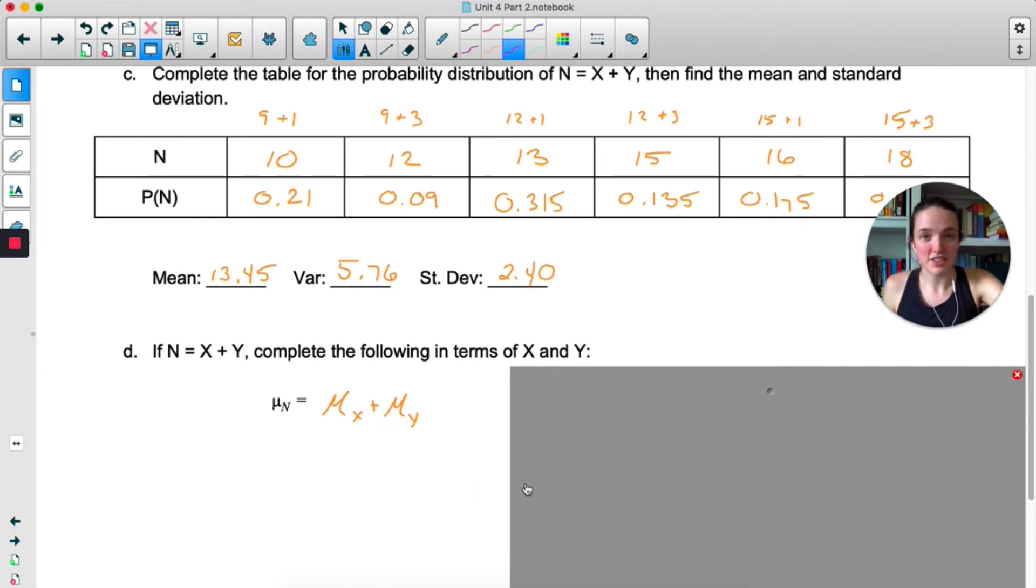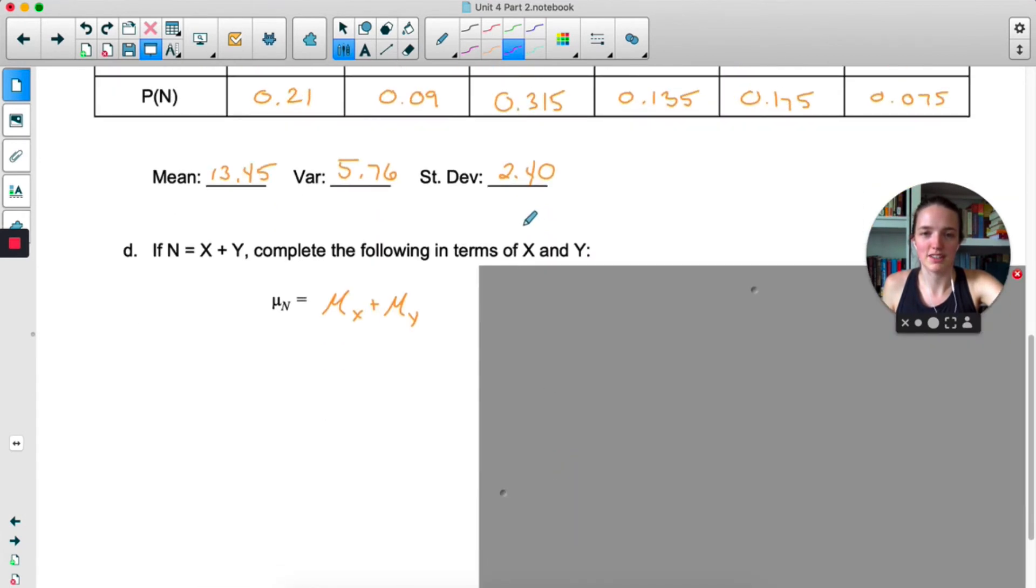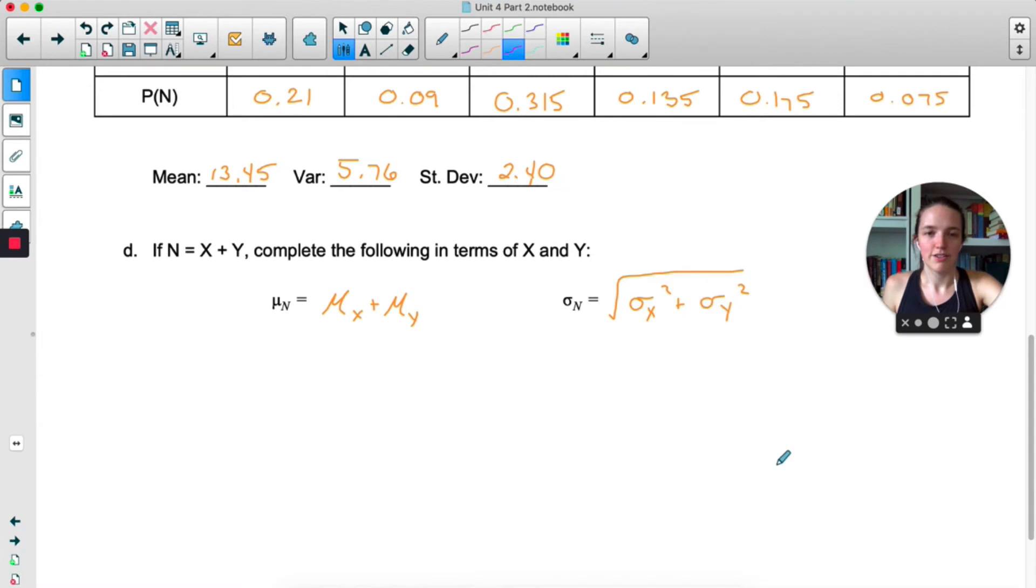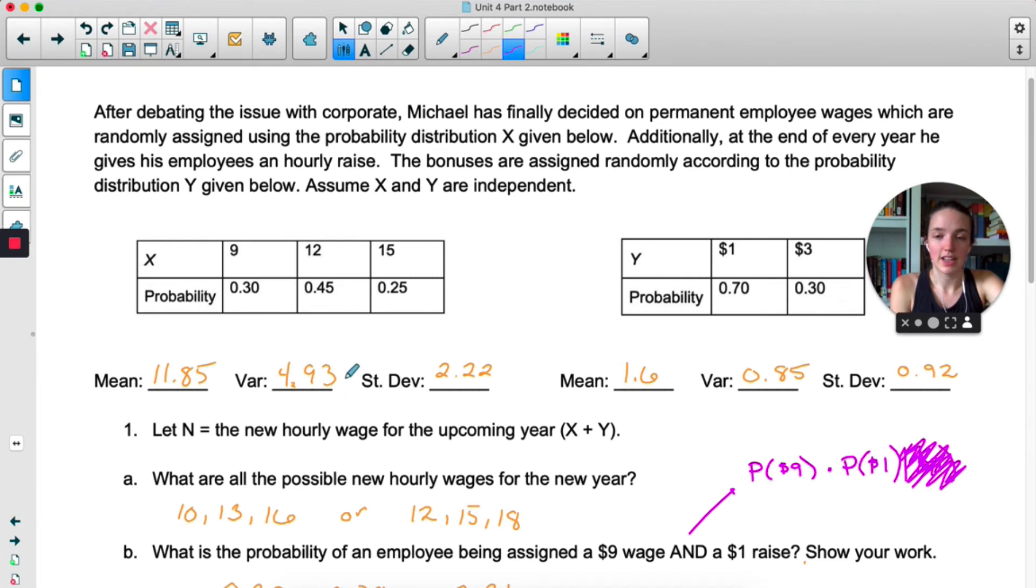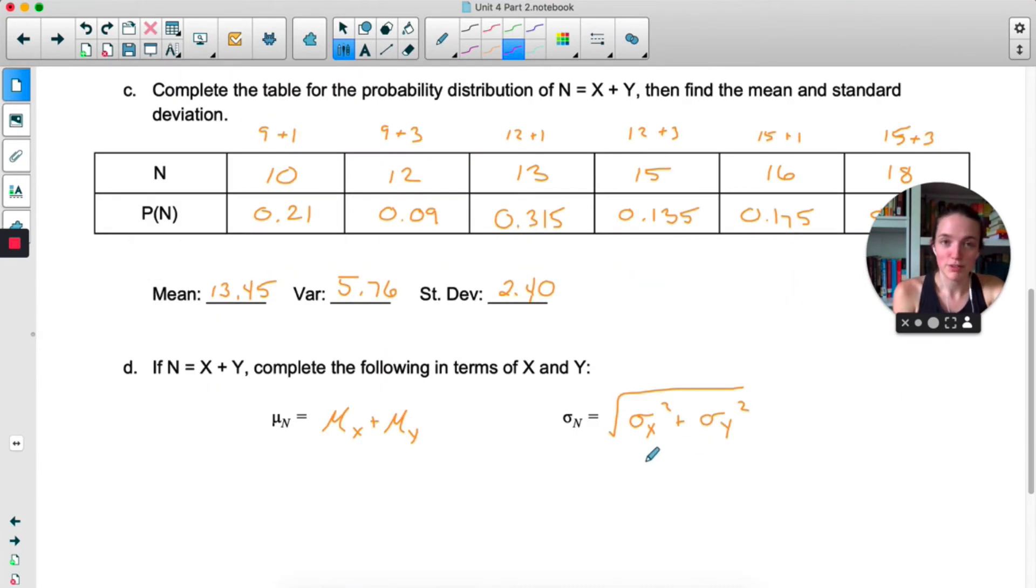Standard deviation is a little weird though. It's not just 2.22 plus 0.92, that doesn't quite get us 2.4. For standard deviations, we actually have to add the variances together. We have to take 4.93 and 0.85, add them together, and then take the square root. And that will get us 2.4. The symbol for variance is literally just sigma squared because it's the standard deviation squared, so that's why I have that written here.